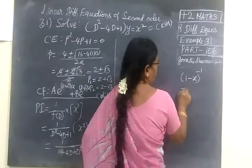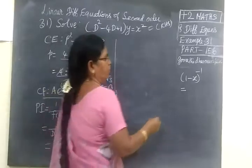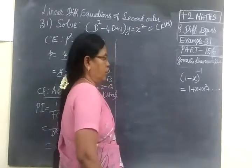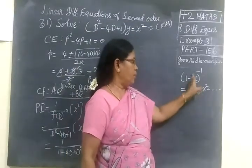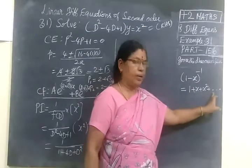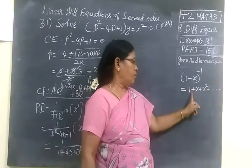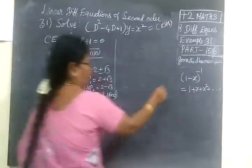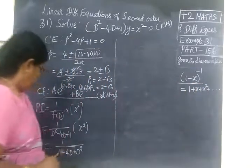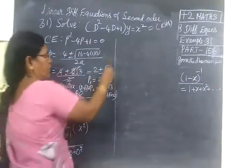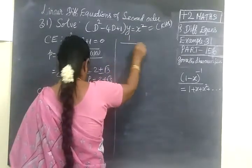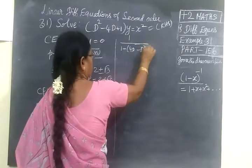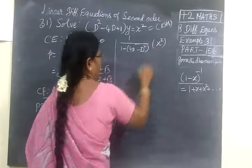We apply (1 minus S)^(−1). The Maclaurin series gives 1 plus S plus S squared plus etc. Here both signs are minus, so the double minus means everything becomes plus. We rewrite as 1 over (1 minus (4D minus D squared)) of (1/2)x squared.